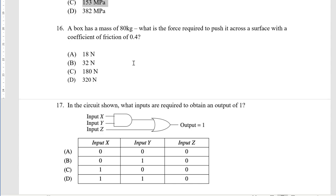A box has a mass of 80 kilograms. What is the force required to push it across the surface? Unless stated otherwise we always assume it's on a horizontal surface. The normal force will be equal to the weight which is mass times gravity. We're going to use gravity of 10, so F equals mu times N. Mu is 0.4 times 800 equals 320, that's D.